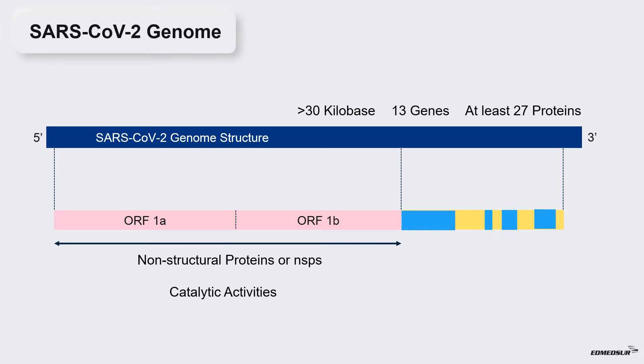In addition, there are structural and accessory proteins. Important structural proteins include spike proteins represented by S, envelope proteins represented by E, matrix proteins represented by M, and nucleocapsid proteins represented by N.